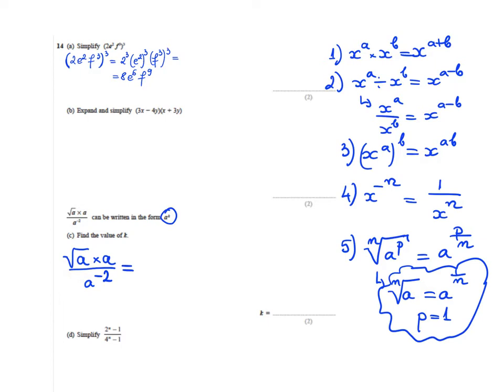I'm going to apply rule number 5 first. So I have a^(1/2) times a, which is actually a^1, over a^(-2).